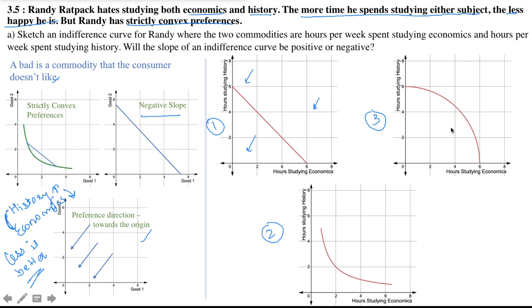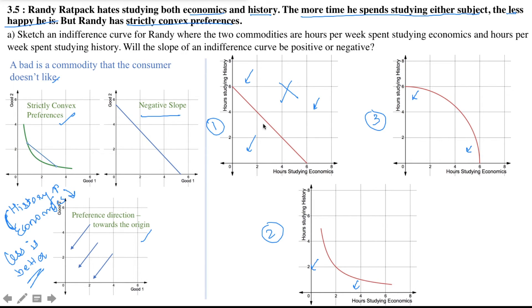Let's work on each one. We have negative slope and preferences towards the origin. We also have to check for strictly convex preferences. For case 1, the straight line represents a flat region, which means the preferences are not strictly convex. Hence, a straight line cannot be the indifference curve for Randy. This is exactly why the quick trick of checking for flat regions is useful — you don't need to calculate all the weighted average bundles.